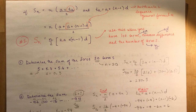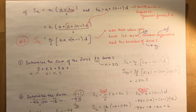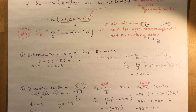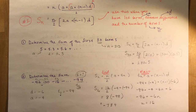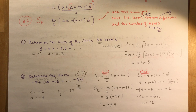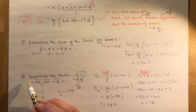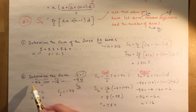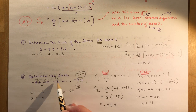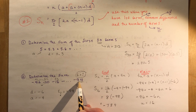This is a continuation of 7.5 arithmetic sequences. My iPhone decided to do an update and shut down just as I was finishing question two. So I'm going to continue with that. What we were doing was you were asked to find the sum of this series: minus 4, minus 10, minus 16, to minus 94.